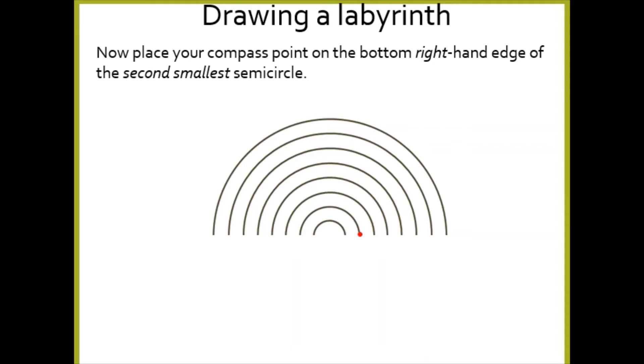Now this is when it gets a little bit tricky, so you're going to have to listen very well to the instructions. Your next job is to place your compass point on the bottom right-hand edge of the second smallest semicircle. The smallest semicircle is here, the second smallest semicircle is here, and I can see this handy red dot to tell me that it's that one that we need to be at.